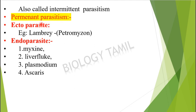Parasitism can also be categorized as permanent or intermittent. Permanent parasitism includes ectoparasitism and endoparasitism. Examples of permanent ectoparasites: lamprey. Examples of permanent endoparasites: Myxini, liver fluke, Plasmodium, Ascaris.